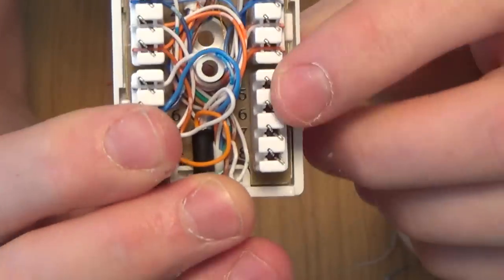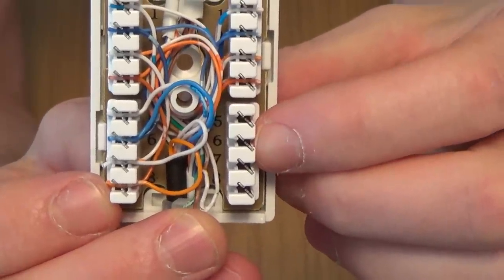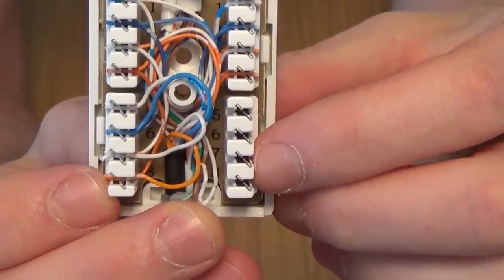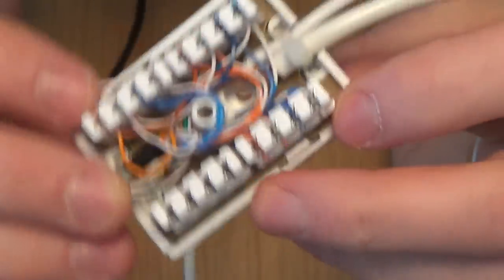And now we have these terminals here free for fitting two more cables. So you can put the white-blue to number five, the blue to number six, the white-orange to number seven, and the orange to number eight. And that's how you can connect up to six cables in this little junction box, and it will work absolutely fine.